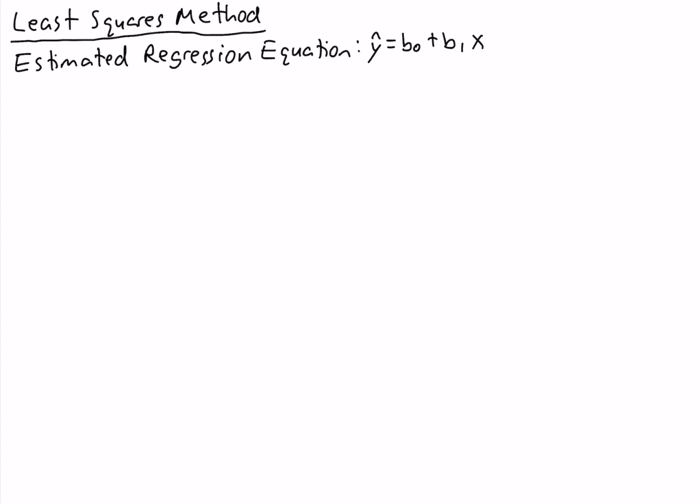To get the estimated regression equation, we need two things: we need b-naught and b1, where b-naught is the intercept and b1 is the slope. The least squares method says we choose values for b-naught and b1 that minimize the sum of y minus y-hat squared, where y are the observed or actual values of y and y-hat are the estimated or predicted values of y.